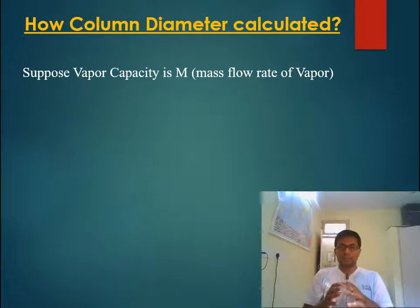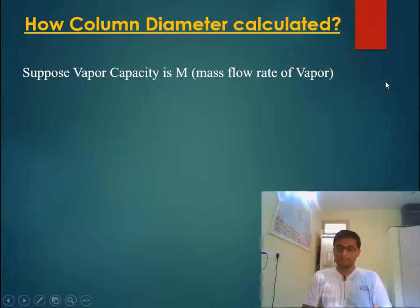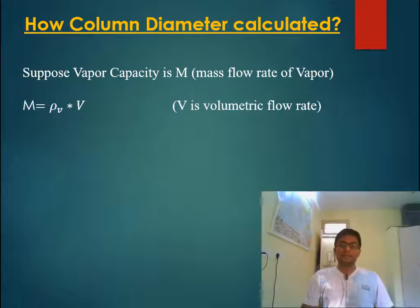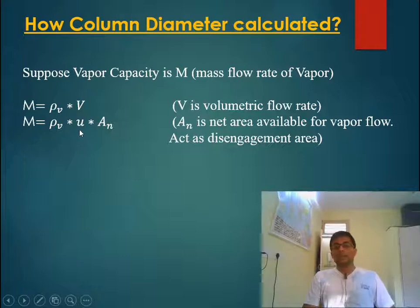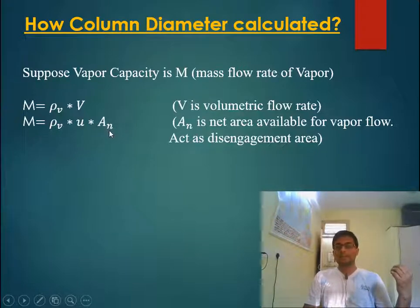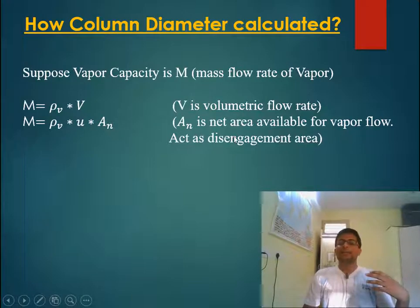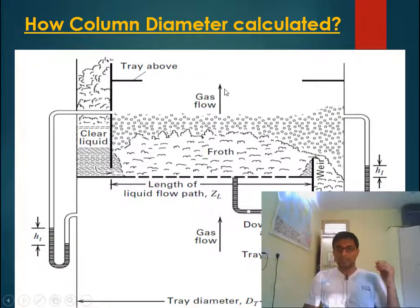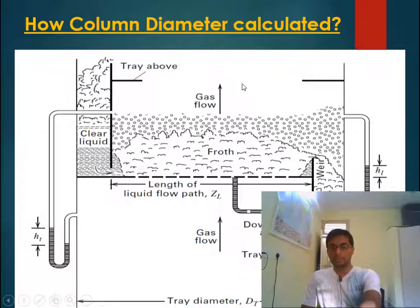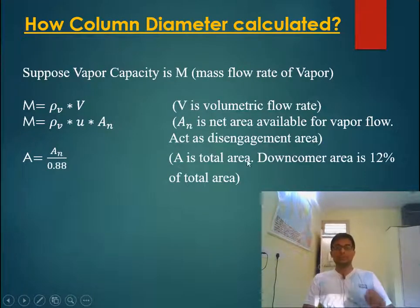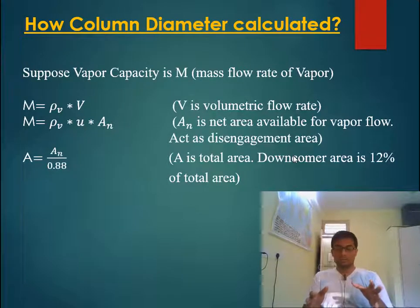Suppose a column has vapor capacity m, where m is the mass flow rate of vapor. This mass flow rate can be written as density of vapor times volumetric flow rate of vapor. The volumetric flow rate of vapor equals vapor velocity times the net area available for vapor flow. In column design, this net area acts as the disengagement area and is smaller than the column cross-sectional area because the downcomer area is not available for vapor flow.